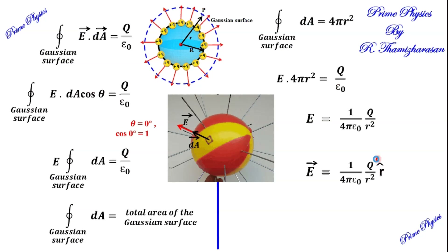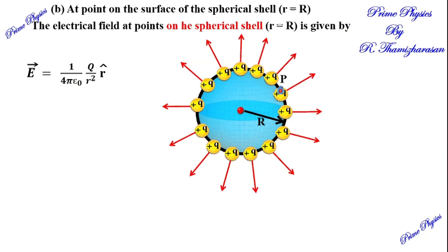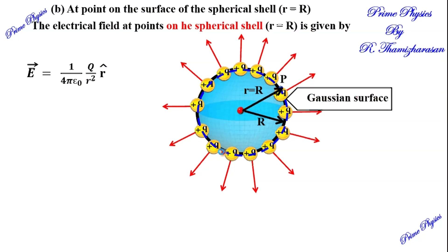Now, on the sphere: we consider the point P on the sphere itself. The small r value and capital R value are the same. The Gaussian surface and the charged sphere coincide — the two spheres have the same radius. Substituting small r equal to capital R into the equation gives the electric field at a point on the sphere.